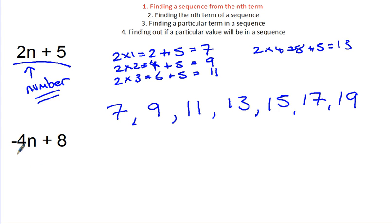If you have a negative number in front of n, that doesn't matter. It still represents the number of the term you're looking for, except that you need to know your rules for negative numbers. So, when we're looking for the first term, you need to know that when you multiply negative 4 by 1, you get negative 4. So, minus 4 times 1, we know is minus 4. And then I'm going to add on 8, which is going to give me a first term of 4.